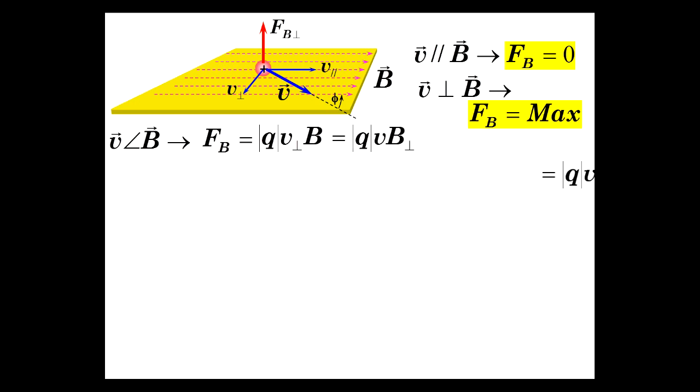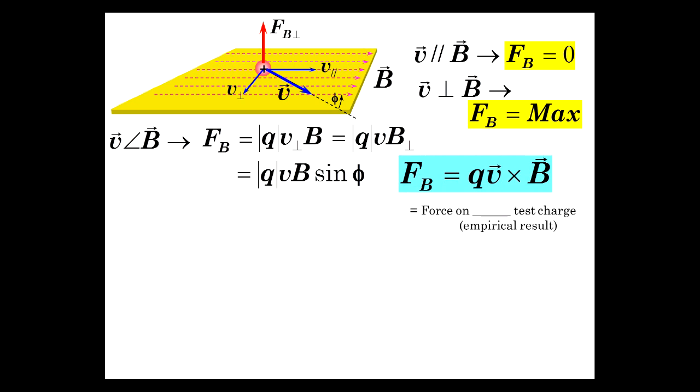Or, that's the same as QV, B perpendicular. Which is, the perpendicular part of this, being this part, is equal to the size of this sine of the angle. That gives you this component. So, FB is Q, V cross B.